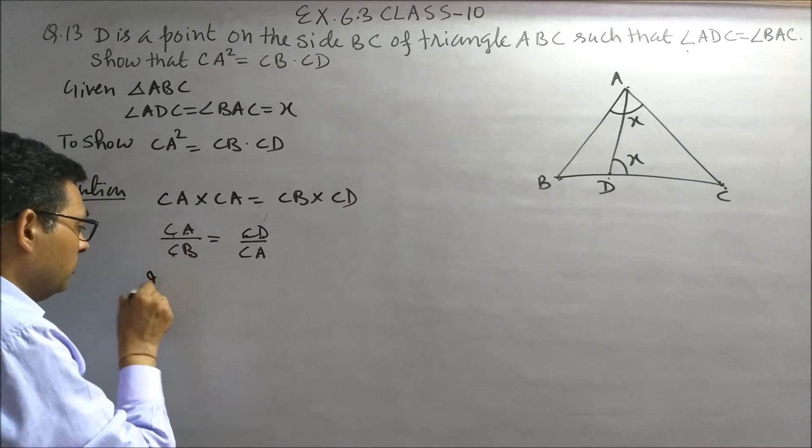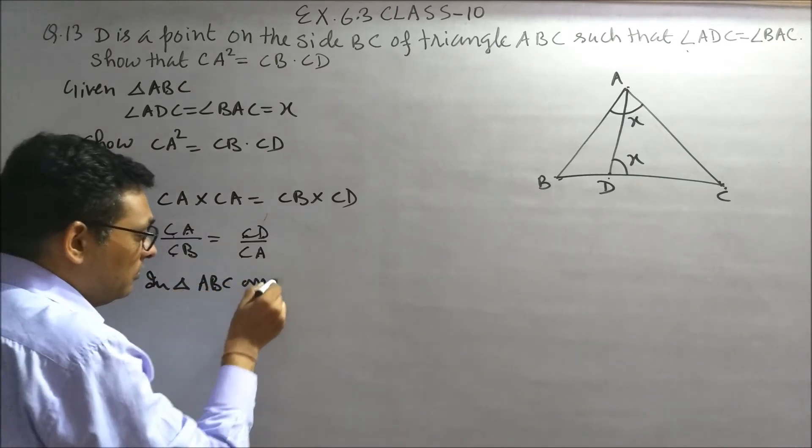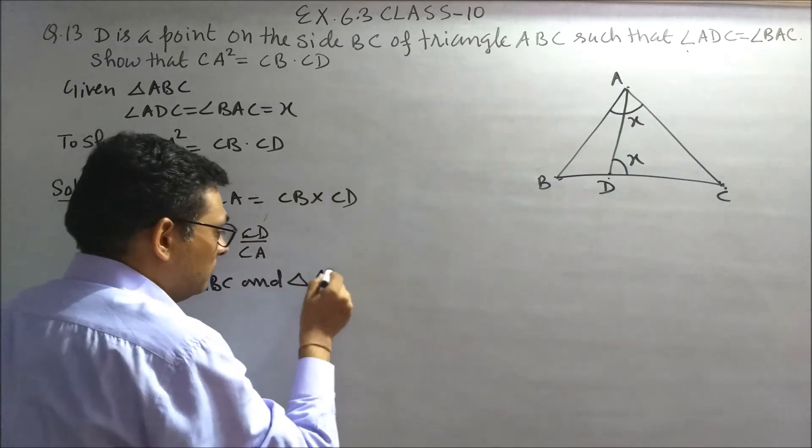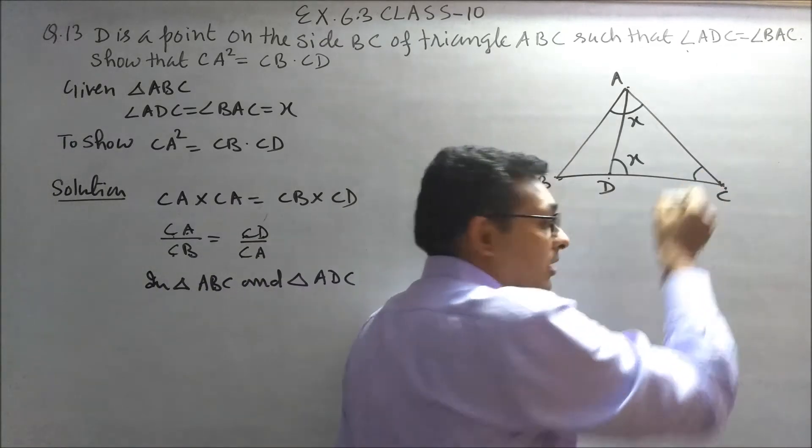So, in triangle ABC and triangle ADC, in both triangles, angle C is common.